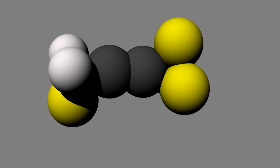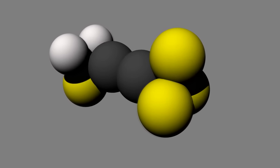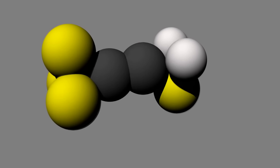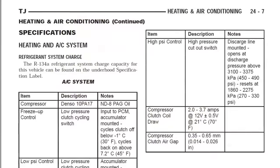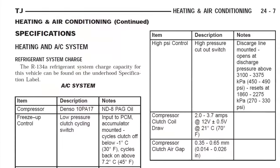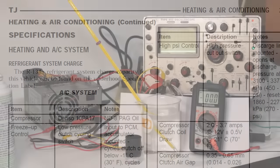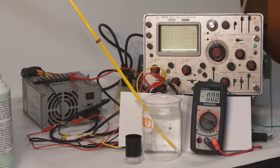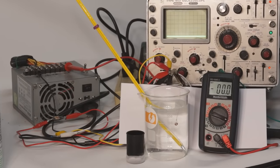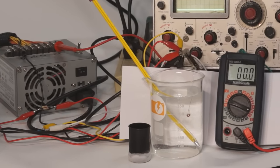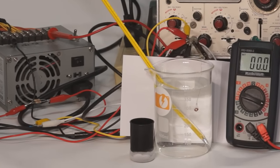Tetrafluoroethane is composed of 2 carbon atoms, 2 hydrogen atoms, and 4 fluorine atoms. It was introduced in the 90s to replace freon in refrigeration systems, however it is already being phased out due to its own contributions to climate change. With a boiling point of minus 26 degrees Celsius, it must be kept below this point in order to remain a liquid at atmospheric pressure.